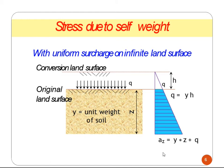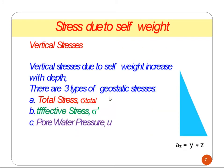When we add a surface surcharge, the stress becomes γ × Z plus q, where q is the surcharge at the original land surface. Adding q gives γ × h — that is the soil unit weight contribution. Next is the vertical stress due to self-weight, which increases with depth. There are three types of geostatic stresses: total stress, effective stress, and pore water pressure u.